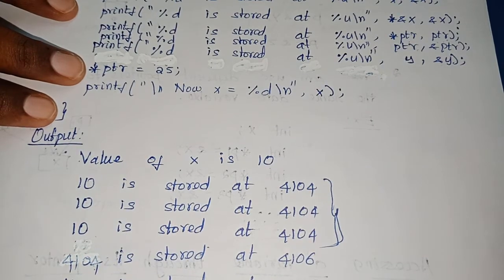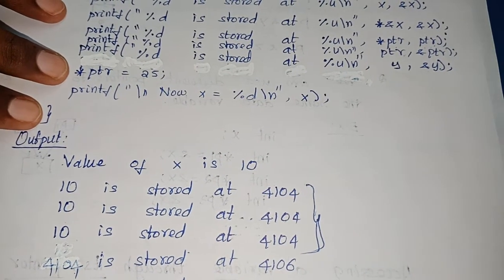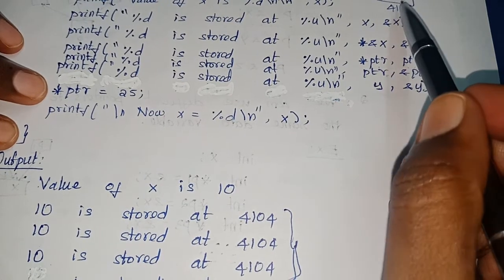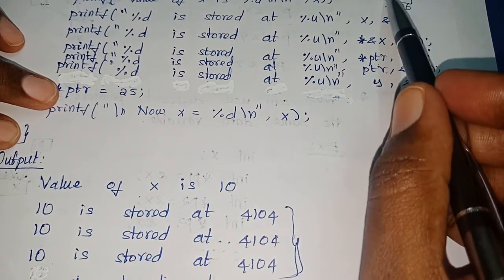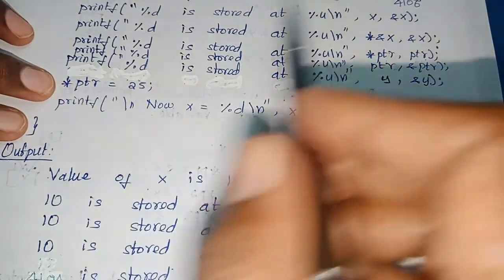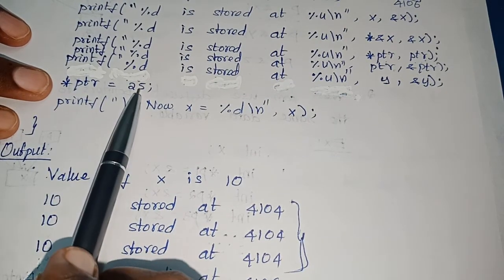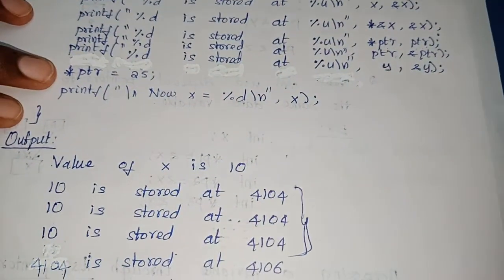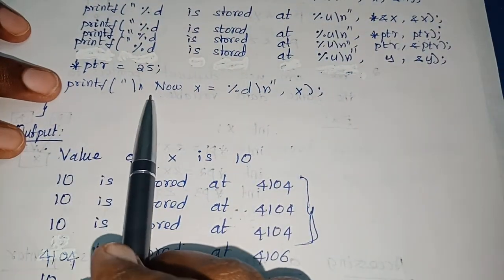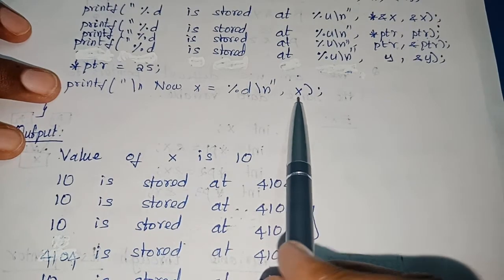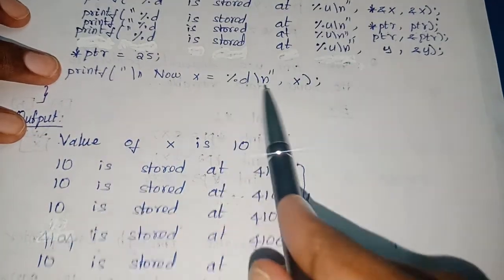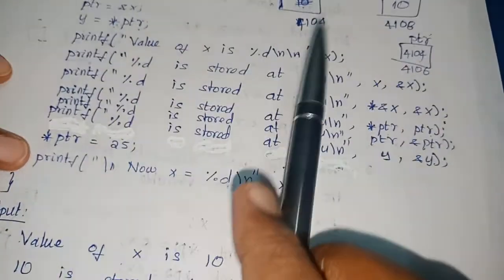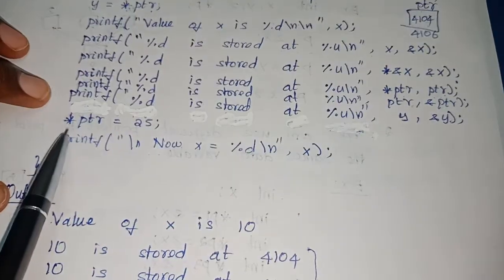Next: *ptr = 25. What is the meaning of *ptr? The star is the dereferencing operator — it collects the address from ptr and goes to that particular address. Here we are doing assignment, so *ptr = 25 goes to address 4104 and initializes that value to 25. Now the value of x is 25. The next printf with x prints: x = 25. So I can change the value of x without using x directly.